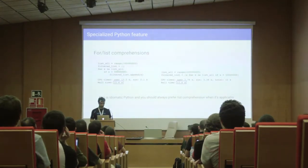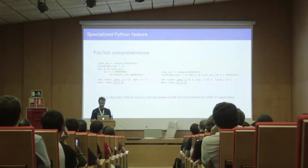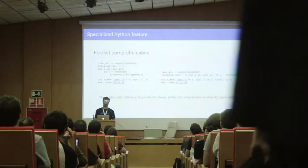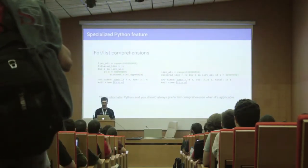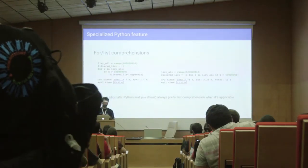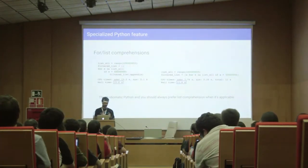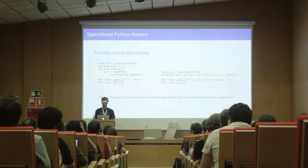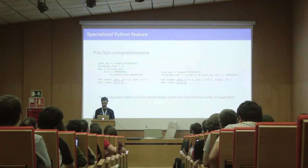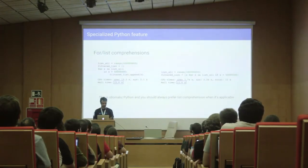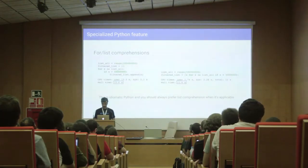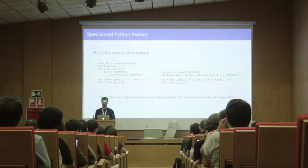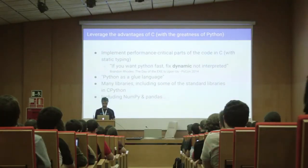Let's see an example. We have a simple filtering task: we want to filter a list of 100 million numbers. On the left you see the for-loop way, which is quite simple and is how you'd do it in most other languages. On the right you see the list comprehension. While the for loop is the most generic way and gives you more control, the list comprehension is implemented in Python in a way that gives you much better performance — a quite noticeable difference. The list comprehension is the idiomatic Python way, and you should always prefer it when relevant.